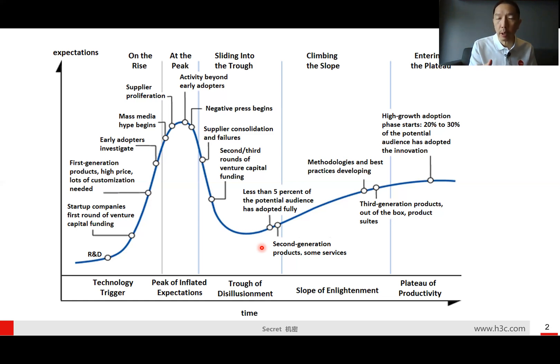There were high expectations, and after some years when they released the product, they faced some challenges in how to deploy in the market. Right now in 2021 and next year, I believe the whole HCI technology is moving to the climbing the slope stage. That means methodologies and best practices for developing the technology are improving a lot, and there will be third-generation products, out-of-the-box products available in the market.